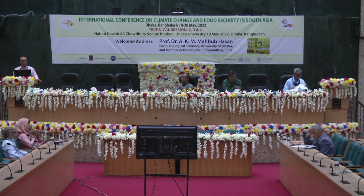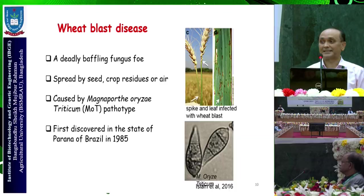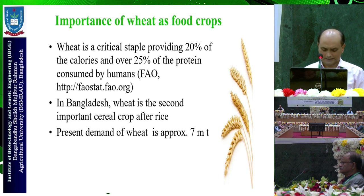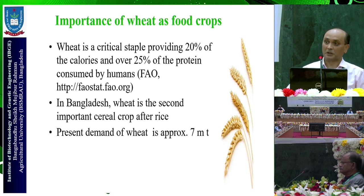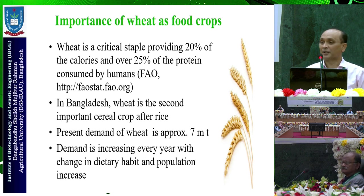The disease is caused by Magnaporthe oryzae. It was a big panic because it had never been seen in Asia or other continents except South America, where it has been a serious problem since 1985. Wheat satisfies 20% of calories and 25% of protein requirements of humans. In Bangladesh, wheat is the second most important cereal crop. We need 7 million tons of wheat but produce only 1.5 million tons or less, so every year we need to import 6 million or more. This year, it is a bigger problem because of the Ukraine and Russia war, and India blocked their wheat export.